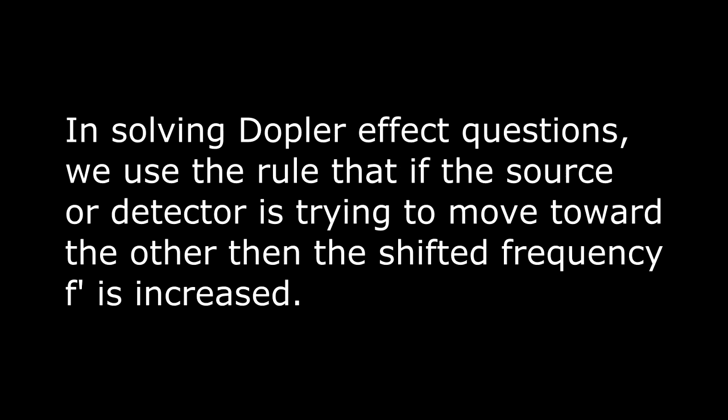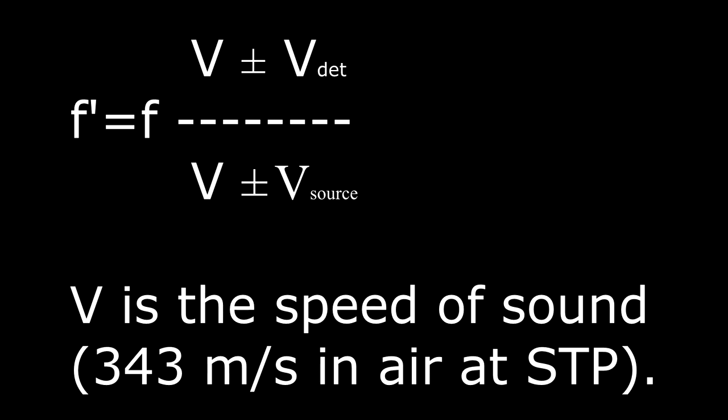In solving Doppler effect questions, we use the rule that if the source or detector is trying to move toward the other, then the shifted frequency f prime is increased. This is the equation for the Doppler shifted frequency f prime. It depends on the speed of the detector and the speed of sound v, which is 343 meters per second in air at standard temperature and pressure.